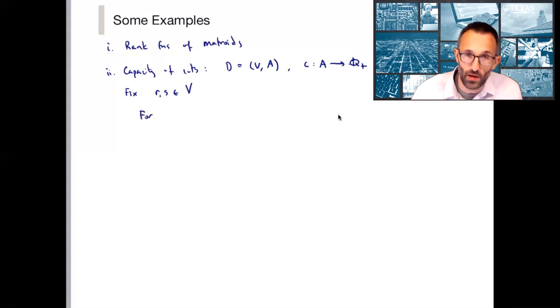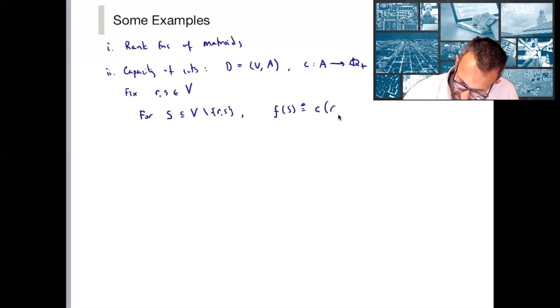Then I'll define my submodular function as follows. For any subset S of V but excluding the special nodes R and S, my set function is F of S is defined as the capacity of the cut delta plus of S and R. And you can check that F is indeed submodular.